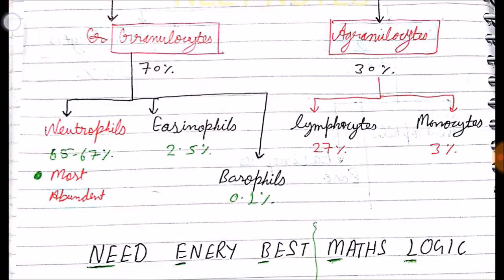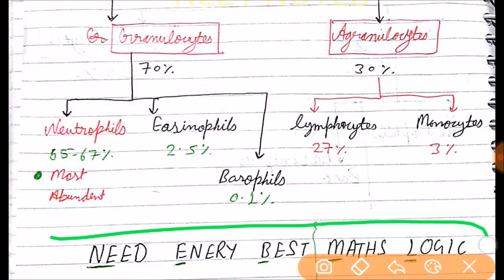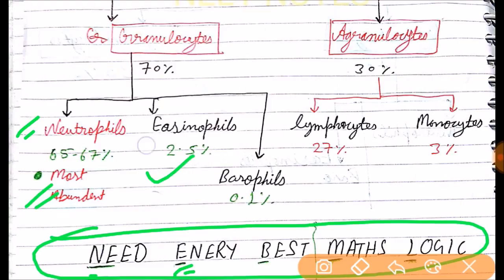Our trick is NEED EVERY BEST MATHS LOGIC. N for neutrophils, which contribute about 65 to 67 percent of cells, which is the most abundant granulocyte. E for eosinophils, which contribute about 2 to 2.5 percent. B for basophils, which is the lowest and contribute about 0.1 percent.